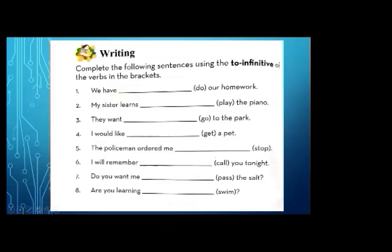Next is writing on page number 18 of the course book: complete the following sentences using the to-infinitive of the verb in the bracket. I have already explained the infinitive and we have done activities, but this is the next task. Number one: we have — blank — our homework. We put 'to' with the correct form. The answer is 'to do' — we have to do our homework.